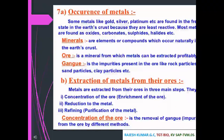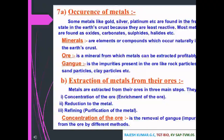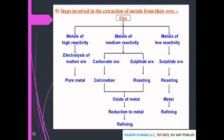Extraction of metals from their ores involves three main steps: concentration of the ore (removal of gangue), reduction to the metal, and refining and purification. The flow chart shows: metals of high reactivity undergo electrolysis of molten ore to give pure metal; metals of medium reactivity — carbonate ores undergo calcination and sulphide ores undergo roasting, both giving metal oxide which is then reduced; metals of low reactivity have sulphide ore that is roasted to give the metal.